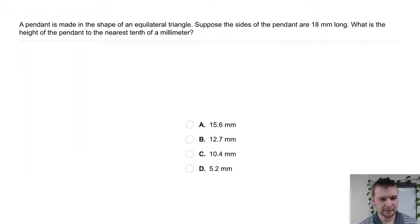Your turn: A pendant is made in the shape of an equilateral triangle. Suppose the sides of the pendant are 18 millimeters long. What is the height of the pendant to the nearest tenth of a millimeter?